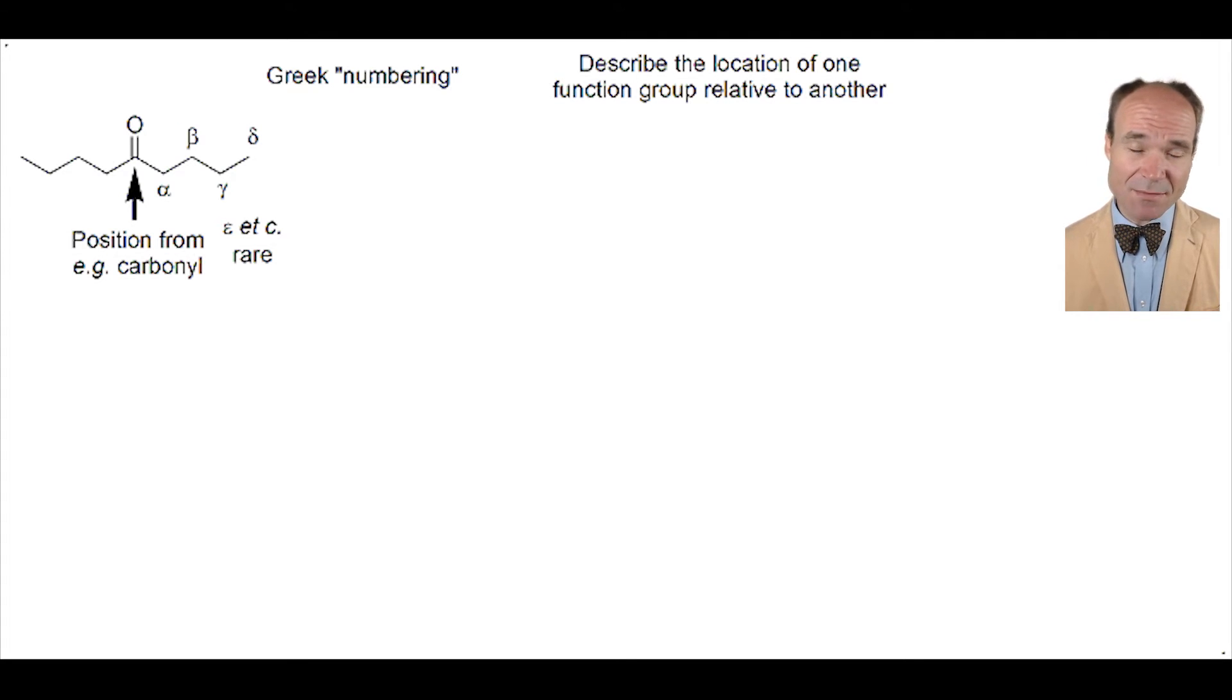Where there are two directions that can be taken from the group, as in this case, one path is alpha, beta, gamma, delta, whilst the other is prime. So alpha prime, beta prime, gamma prime, and delta prime. It doesn't matter which path is prime and which is not.